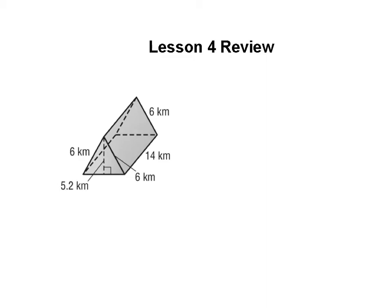Remember, the surface area means all the sides combined — the area of all the sides. We want to make a list of all the different sides. We've got a front triangle, a back triangle, a left side, a right side, and a bottom. I always like to use 'bot' for bottom so I don't mix it up with 'back.'